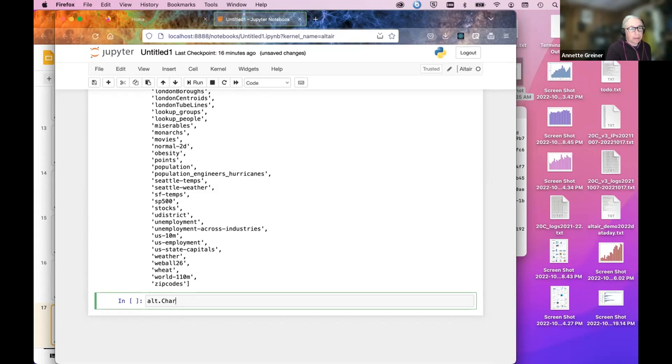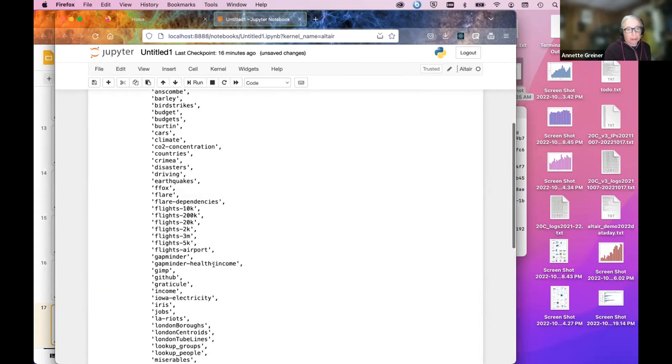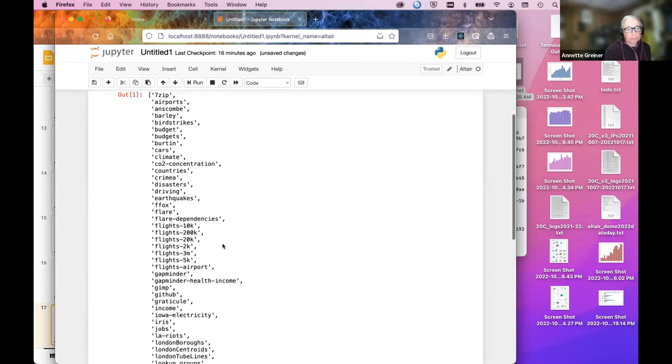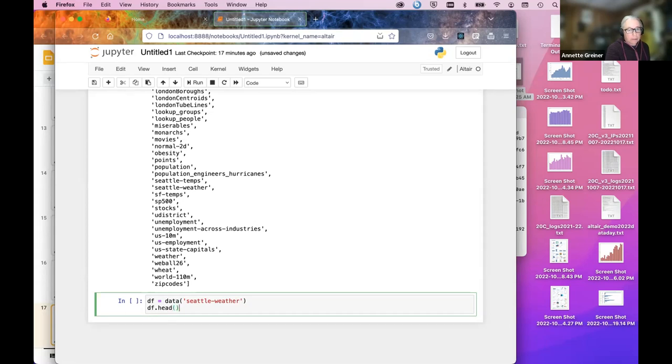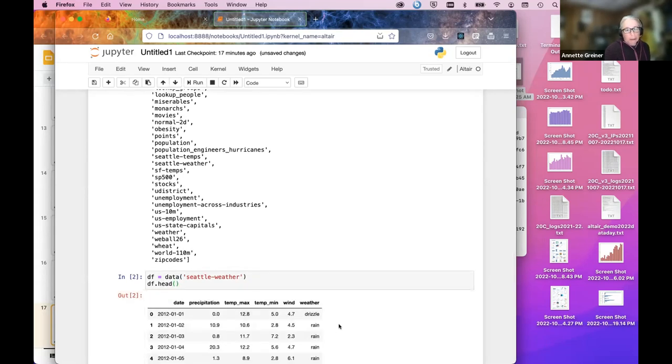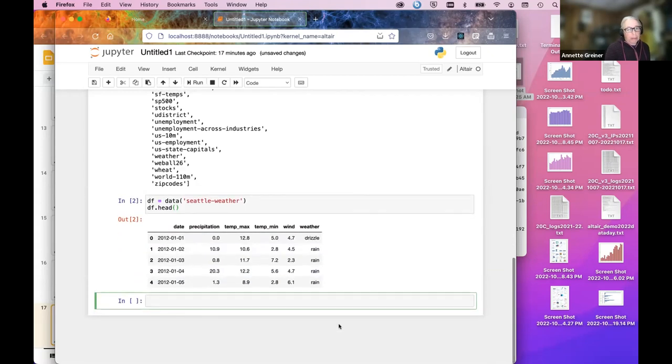So I'm just going to pick one of them that I've been poking at so that I know it'll behave. But let's do just a simple area chart. Oh wait, I didn't set up DFT, did I? Yeah. Let's just look at this first one. So I'm looking at Seattle weather.